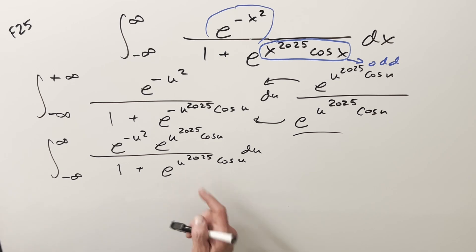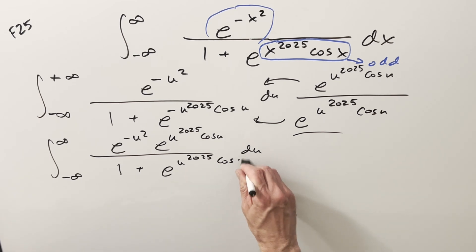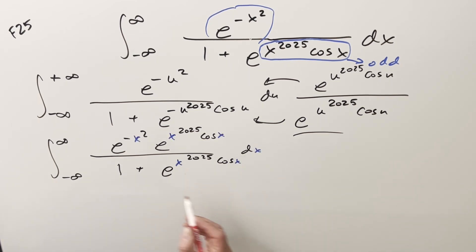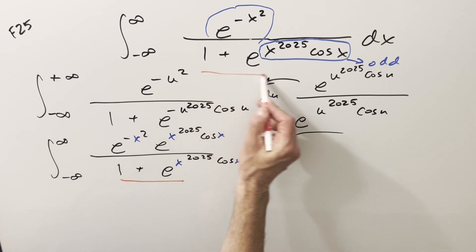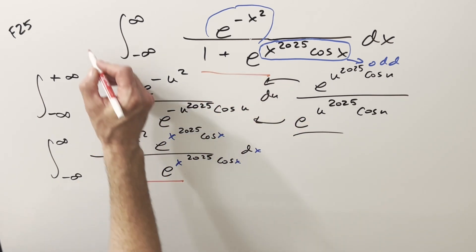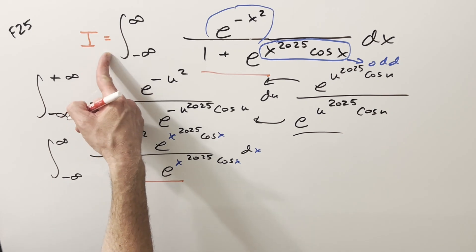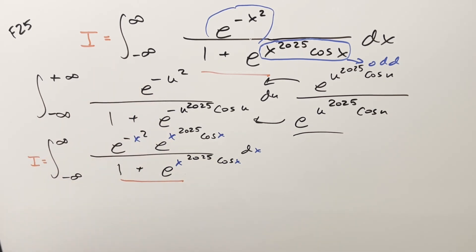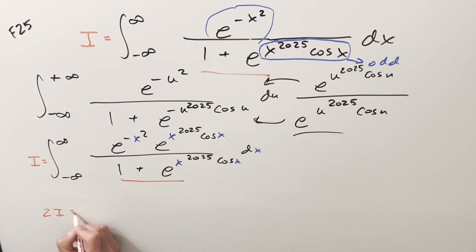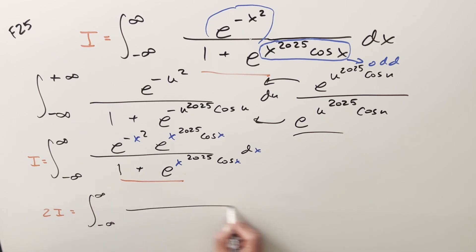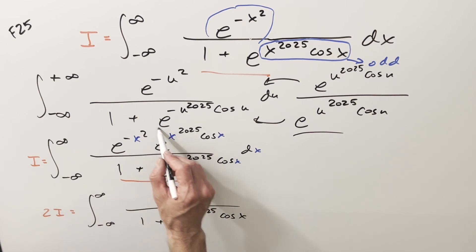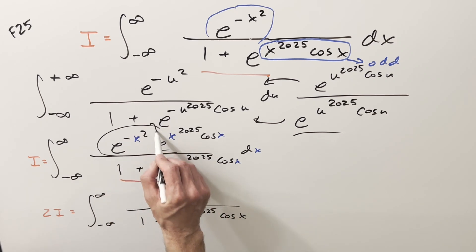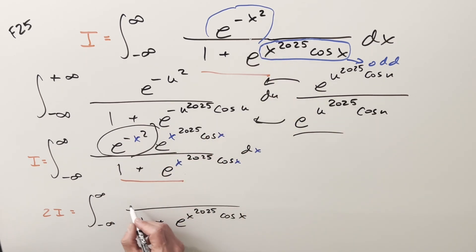From here, I want to do a variable change back to x. In a definite integral, changing the variable name doesn't change the value. Now the denominator is identical to the original, and we have the same bounds. Let's label the original integral i — and this transformed version is also i. Adding these two copies together gives 2i, and we can put everything over the same denominator.